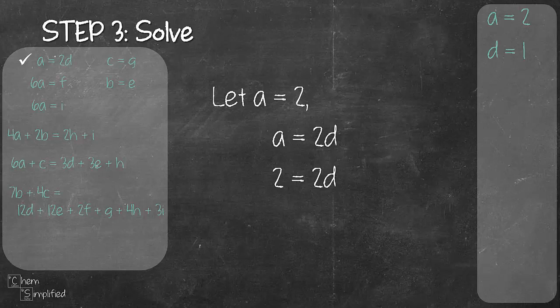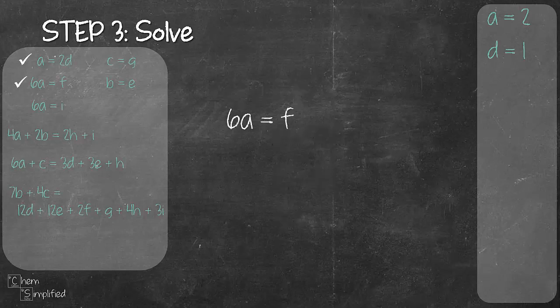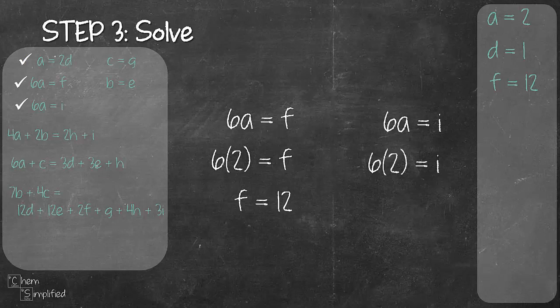So anyway I went with a equals 2 and I got d equals 1. Plug in a equals 2 in the 6a equals f equation. That gives us f equals 12. Now we also can do the same for 6a equals i and that gives us i equals 12.